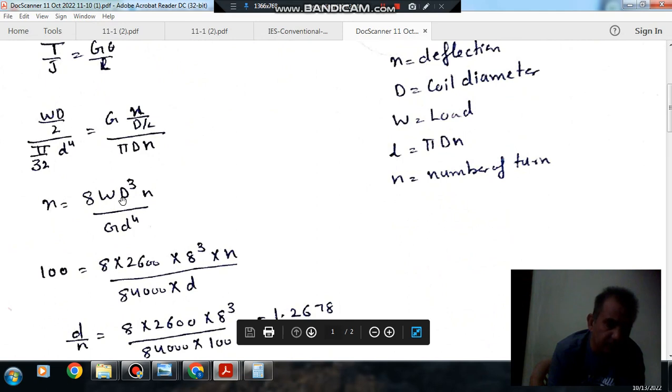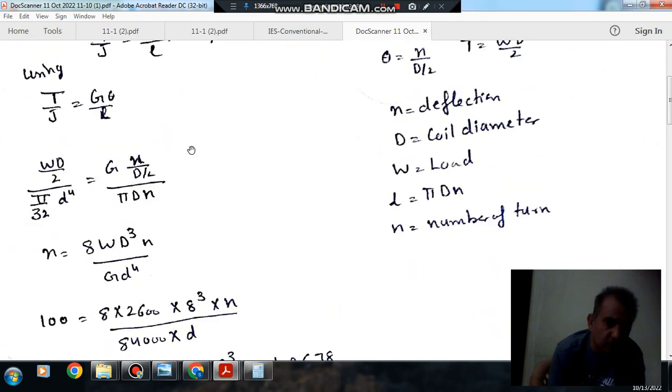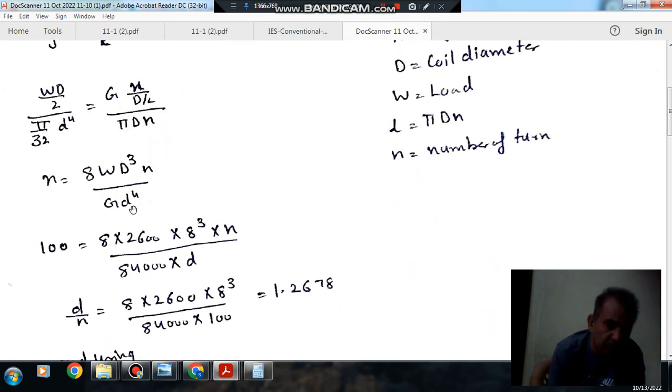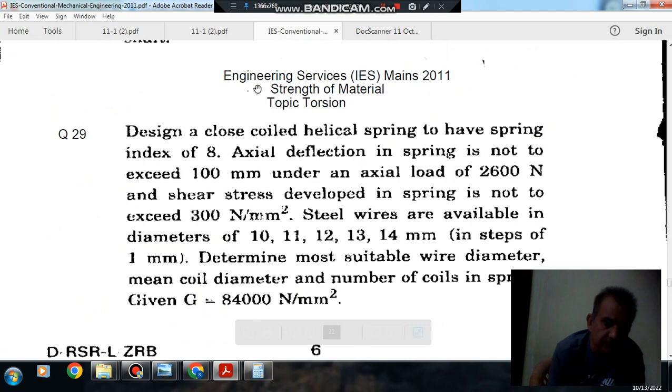So you can put D by d as 8, so D cubed by d cubed is 8 cubed, and one d will be left. W is 2600, this is the first condition of 100, and G is given as 84000.